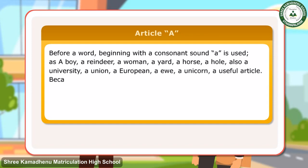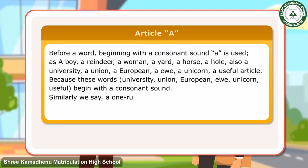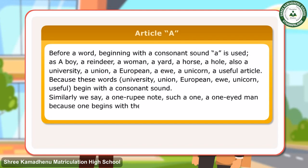Because these words — university, union, European, EU, unicorn, useful — begin with a consonant sound. Similarly, we say 'a one-rupee note,' 'a one-eyed man,' because 'one' begins with the consonant sound W.